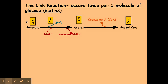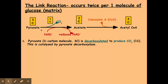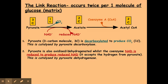The pyruvate, which has been made from glycolysis in the cytoplasm, has to be actively transported into the mitochondrial matrix. Once it's in the matrix, we can undergo the link reaction, whereby pyruvate is turned into acetate. It does that by the removal of one carbon to form carbon dioxide — so my pyruvate has been decarboxylated. Also, my pyruvate has lost a hydrogen electron to the NAD to form reduced NAD, which means that my pyruvate has been oxidized, or dehydrogenated.